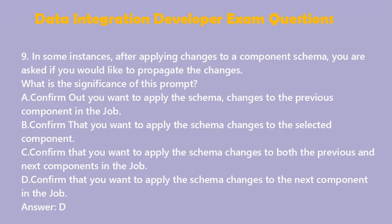Question 9: In some instances, after applying changes to a component schema, you are asked if you would like to propagate the changes. What is the significance of this prompt? A. Confirm that you want to apply the schema changes to the previous component in the job. B. Confirm that you want to apply the schema changes to the selected component. C. Confirm that you want to apply the schema changes to both the previous and next components in the job. D. Confirm that you want to apply the schema changes to the next component in the job. Answer: D.